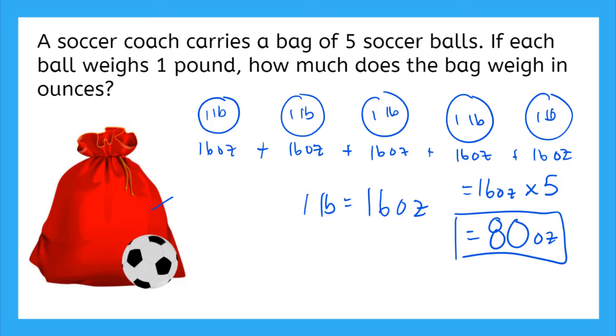And now if we knew that the weight of the bag was equal to, let's say, five ounces, then we would add five ounces, the weight of the bag, plus the five soccer balls, which is 80 ounces. And that would give us a total for the bag plus the five soccer balls of 85 ounces. So that would be our total.